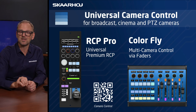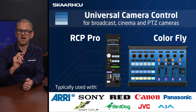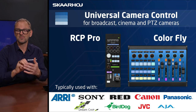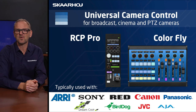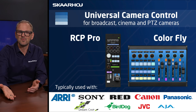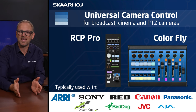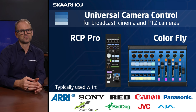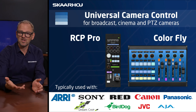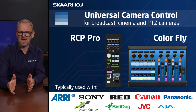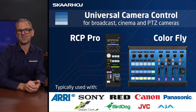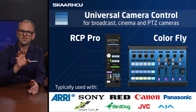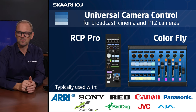The brands you can control with RCP Pro and Colorfly include ARRI cameras — high-end cinematic shallow depth-of-field live production cameras — as well as Sony cameras of all kinds, RED cameras, Canon, Panasonic, DreamChip POV cameras, BirdDog, JVC, and AJA's color box, which can also be shaded with these products. There are many more brands, but these are the main ones typically used for shading control.